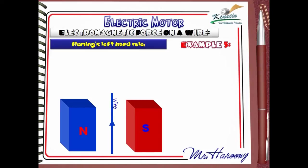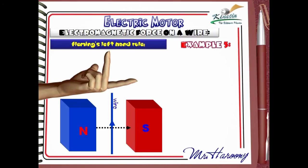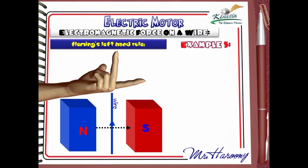Example 5: here is the magnet and the wire. Press the pause button if you want to think about the answer yourself. The dotted black arrow indicates the direction of the magnetic field from north to south. Fleming's Left Hand Rule is applied with the first finger pointing to the magnetic field from north to south, in this case from left to right.